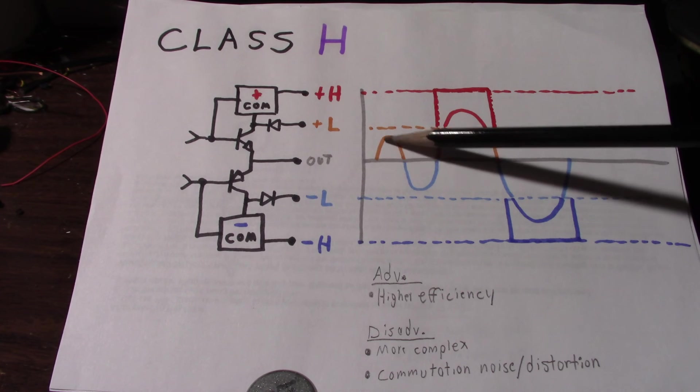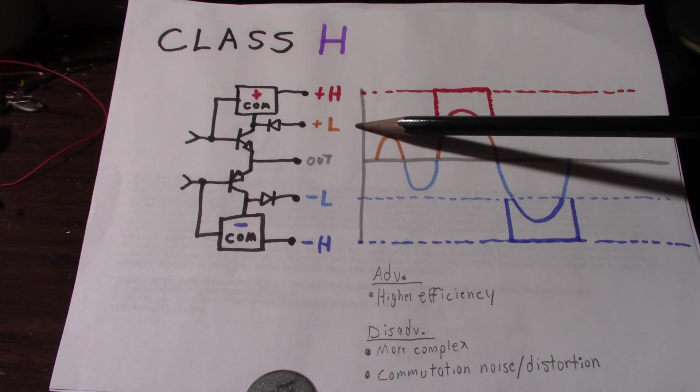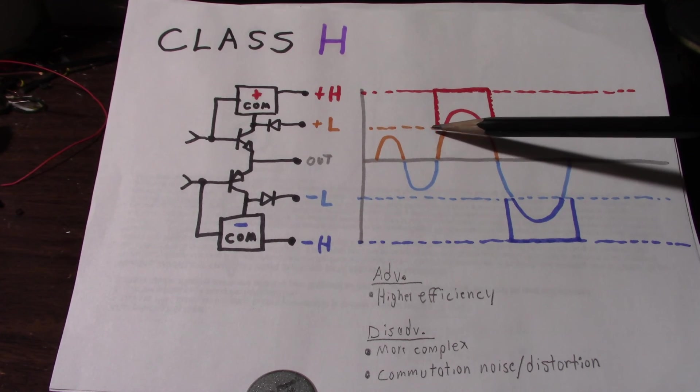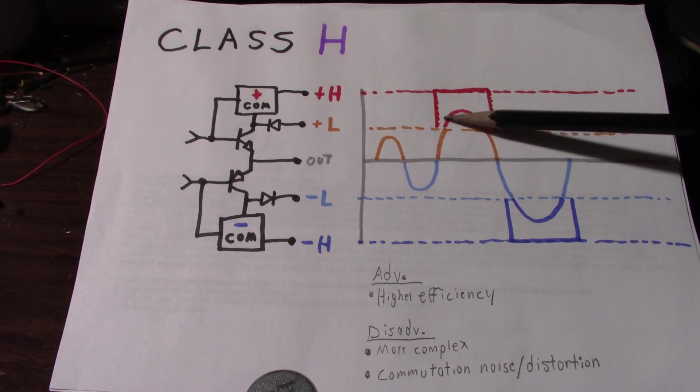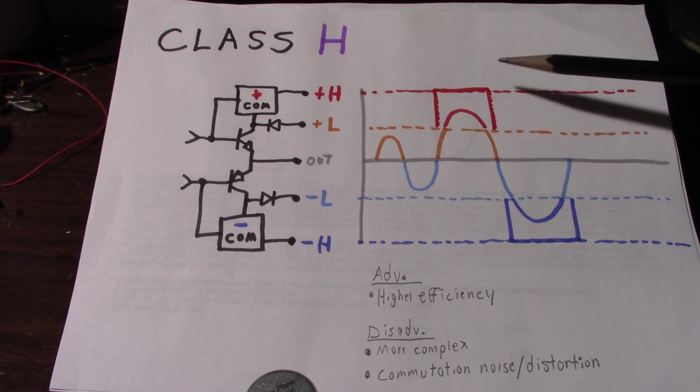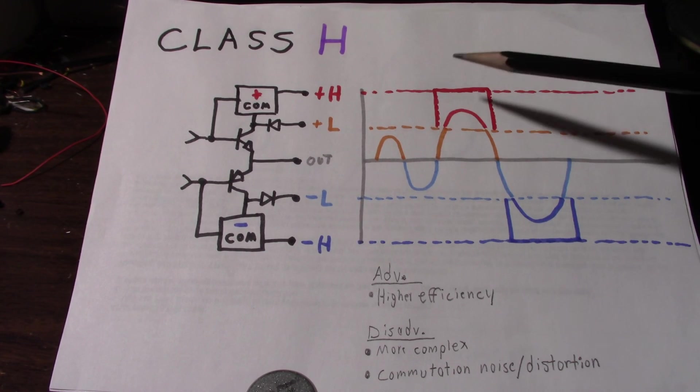And you can see, with one channel, I had the signal. The other channel, I had the supply rail. And you can see this very thing. It was at the low voltage. And when that signal approached, it switched high. The signal went over and then came back down, and it switched back to the lower rail. So you actually saw the amplifier doing its business there.